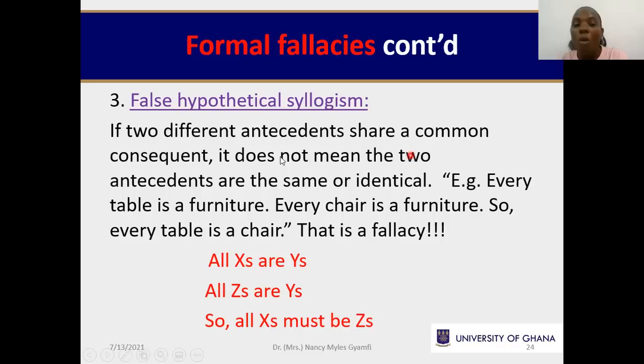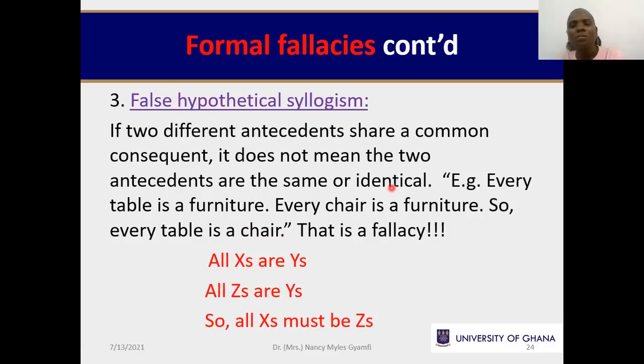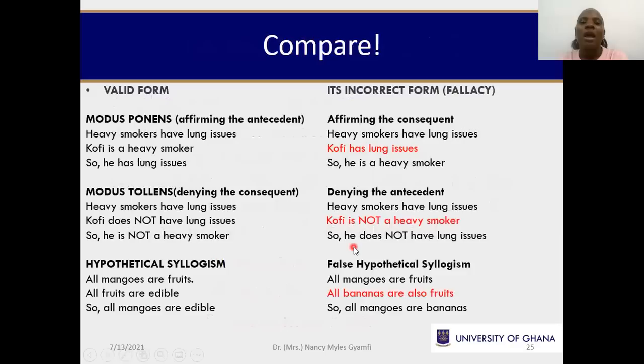The false hypothetical syllogism: if two different antecedents share a common consequence, it does not mean the two antecedents are the same or identical. The pastor may go to the bar and the pickpocket may also go there — they share the bar as their common consequence, yet you cannot say pickpockets are pastors. Every table is furniture, every chair is furniture — so every table is a chair. That is a fallacy.